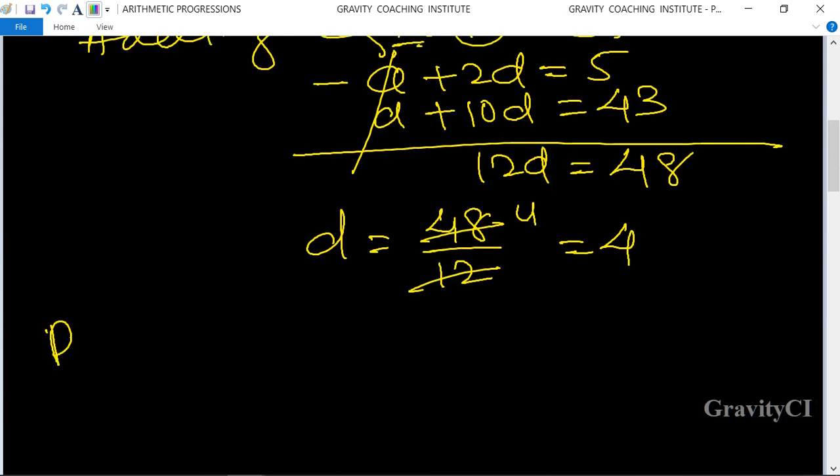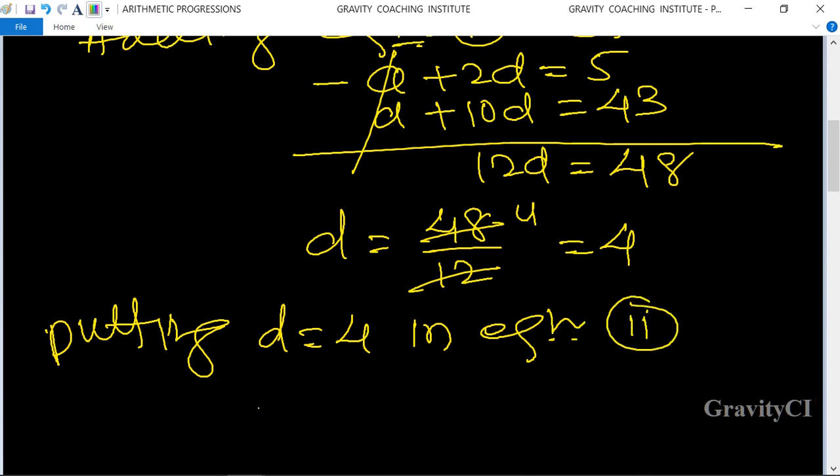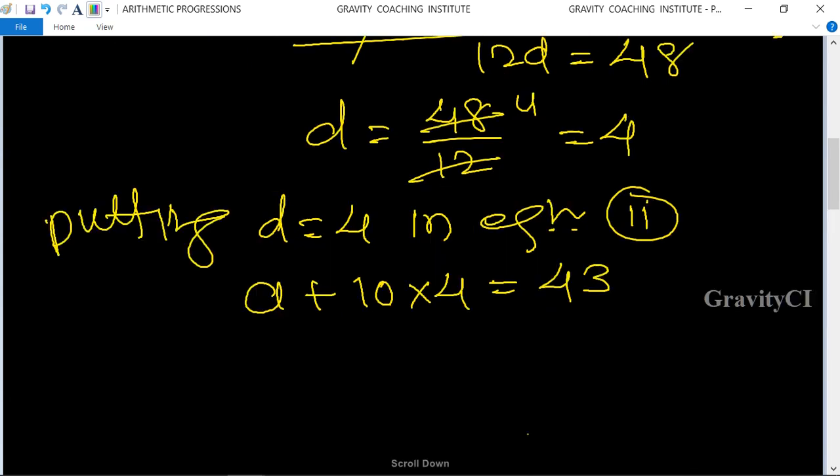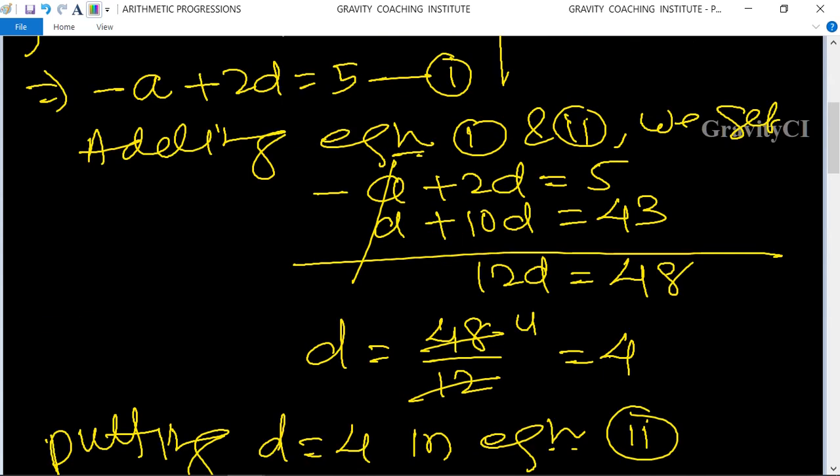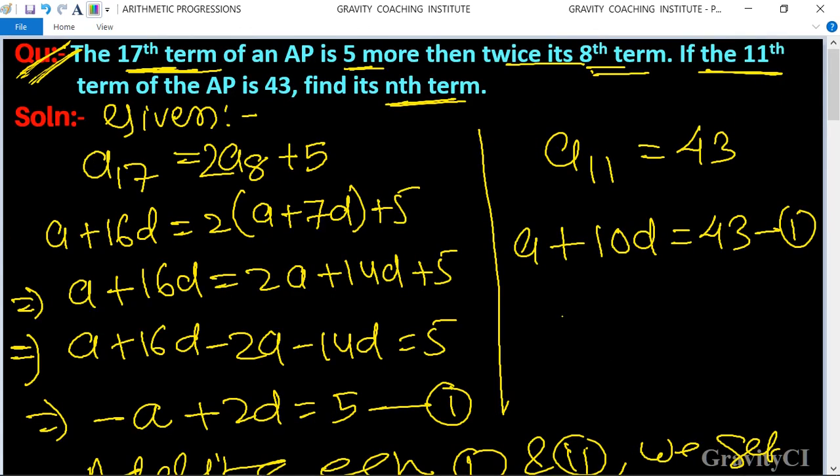Now putting d equals 4 in the equation, a + 10 times 4 equals 43, so a + 40 equals 43. Therefore a equals 43 minus 40, so a equals 3. Now to find its nth term: